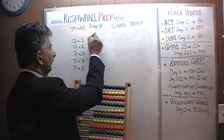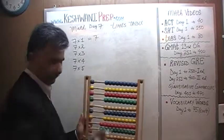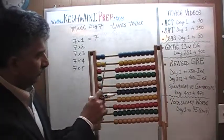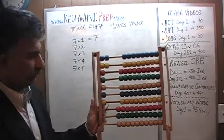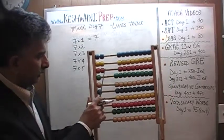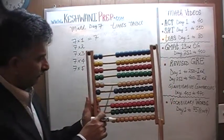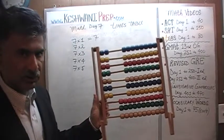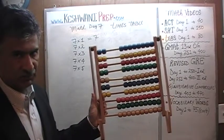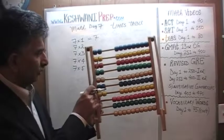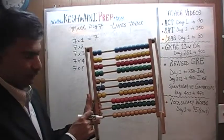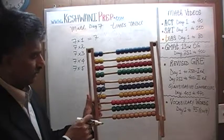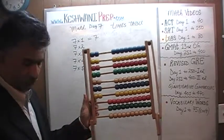How about 7 twos? We need groups of 2. We need 7 groups of 2. Now we have 7 groups of 2 each. We just have to count by 2: 2, 4, 6, 8, 10. 10 plus 2 is 12. 12 plus 2 is 14. So 7 twos are 14.